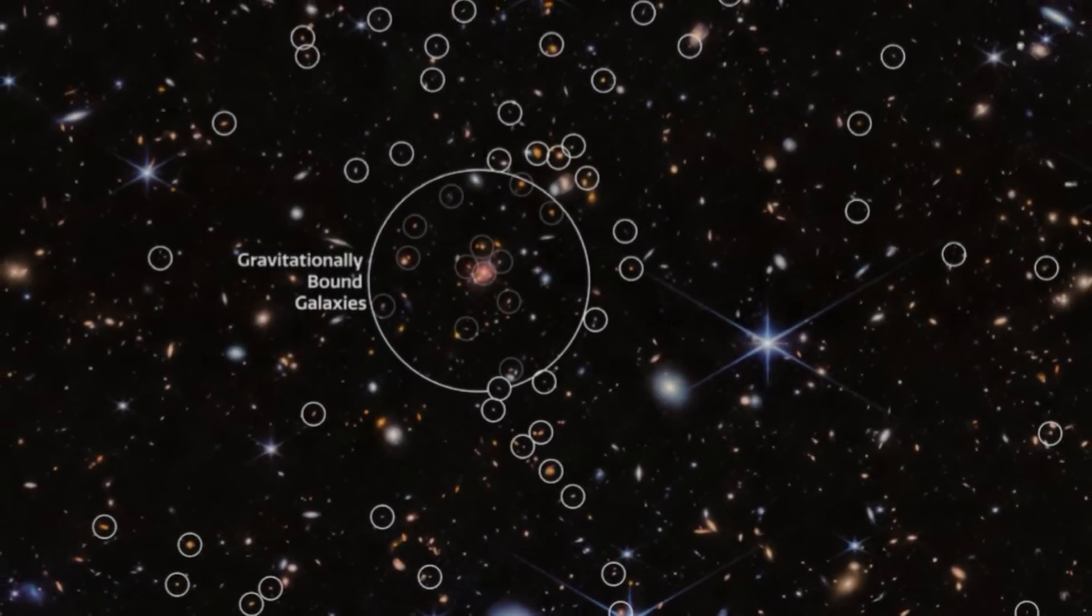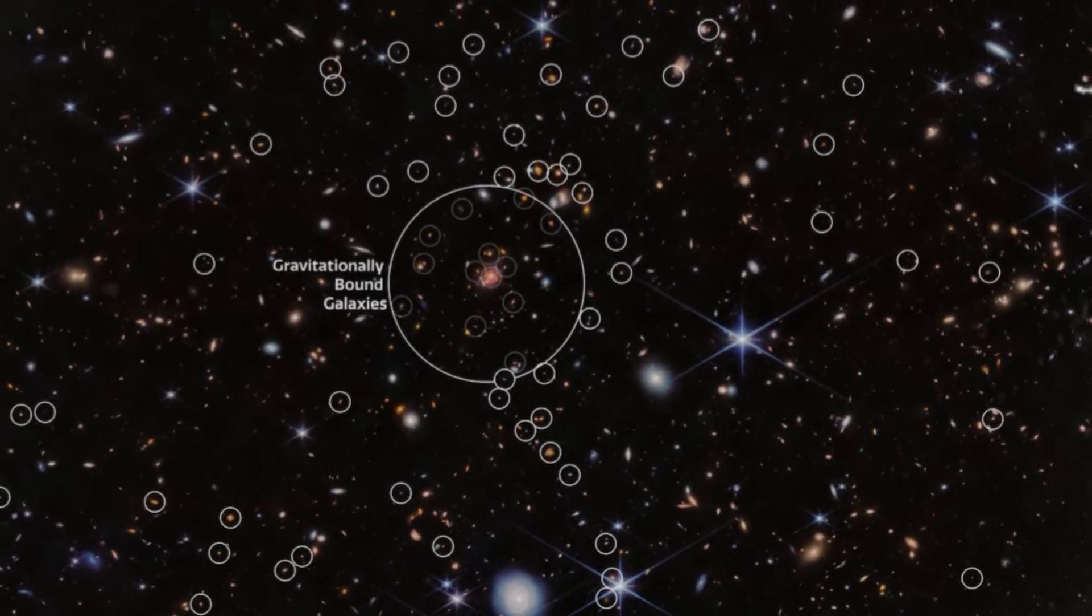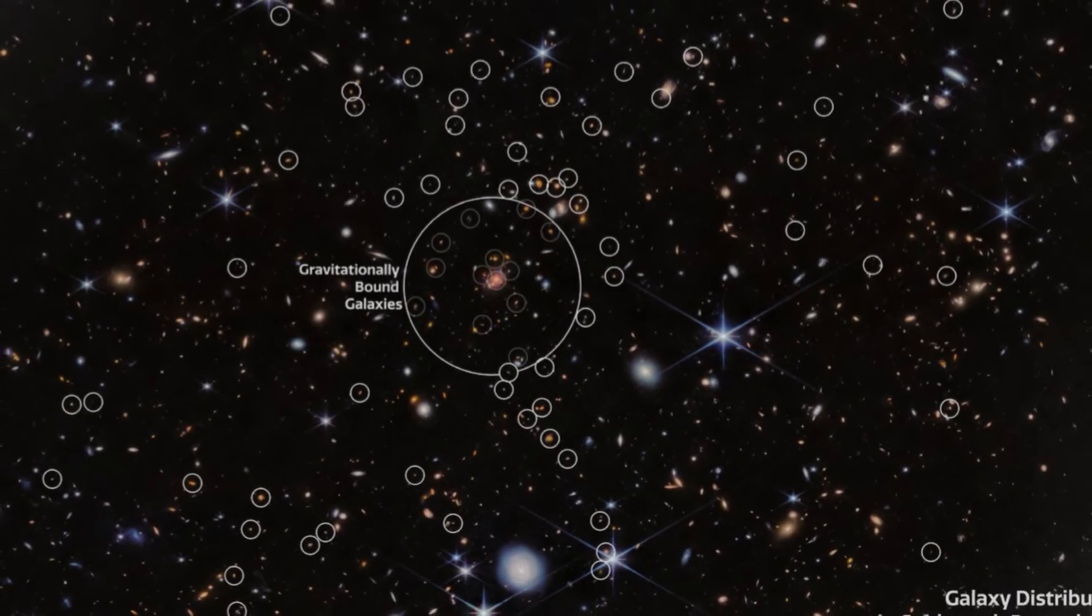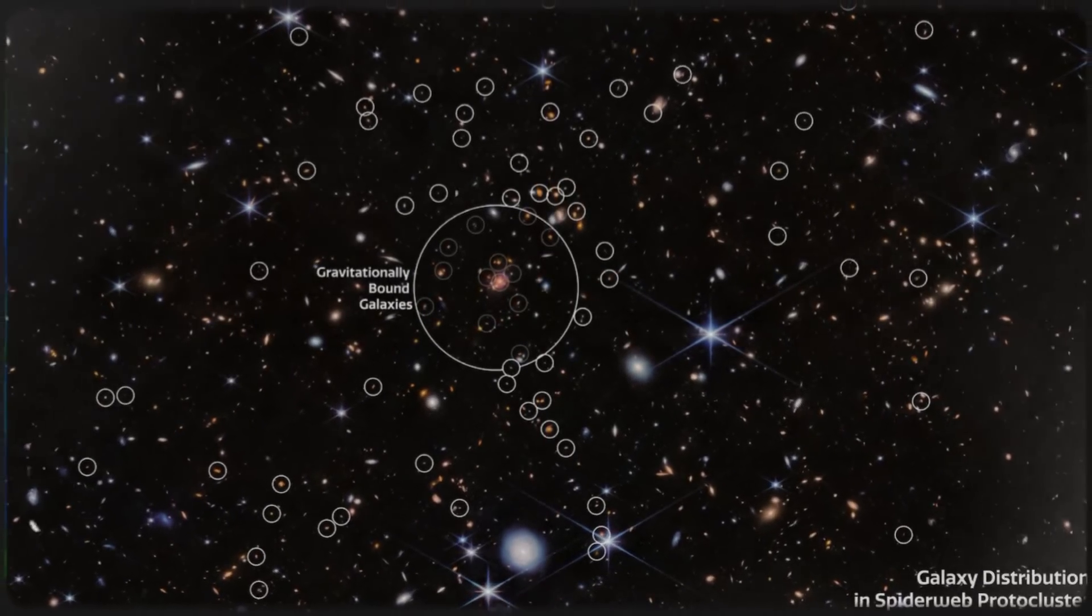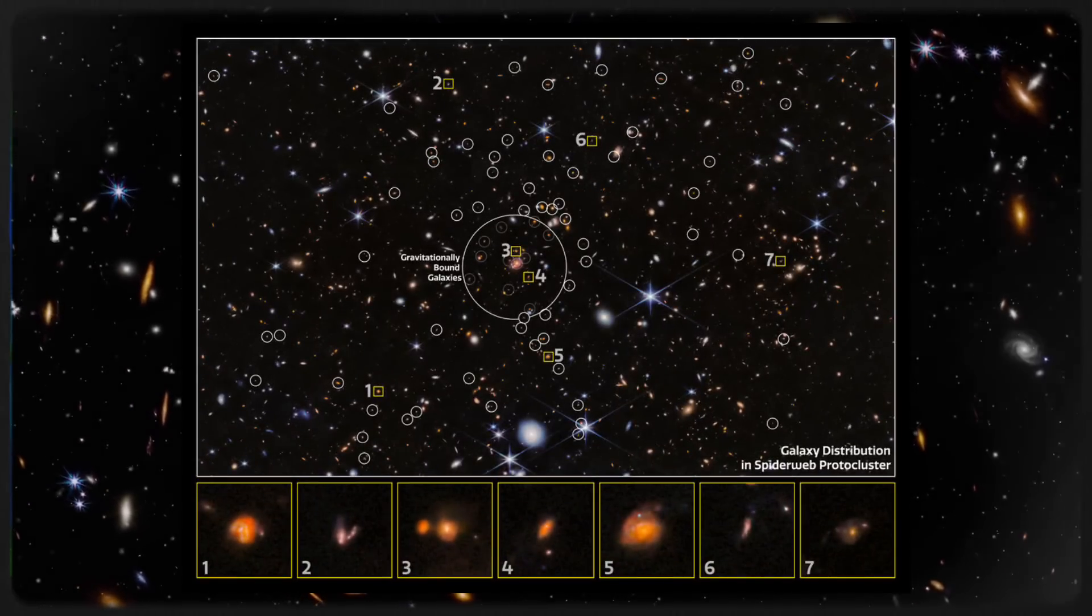The spiderweb protocluster provides an ideal setting to test this idea. Because it's so distant, we see it as it was less than 3 billion years after the Big Bang, an early stage in the universe's history. With its dense concentration of massive galaxies and their supermassive black holes, it serves as a perfect cosmic laboratory for studying the link between black holes and star formation.